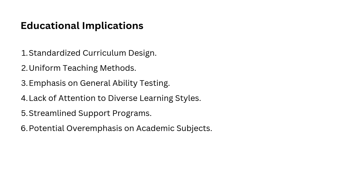Point number three: emphasis on general ability testing. Intelligence tests — particularly those focused on general cognitive abilities like IQ — may be heavily utilized. Schools could base important decisions such as class placement, student tracking, and resource allocation on these tests, assuming that intelligence can be effectively measured through such assessments. Point four: lack of attention to diverse learning styles. Since the theory suggests that intelligence is a singular, overarching ability, educators might not focus enough on students' individual learning styles, preferences, or strengths. Students who don't excel in traditional academic tasks might be considered less intelligent, even if they possess strong creative or practical skills.